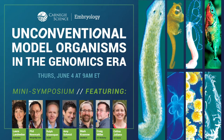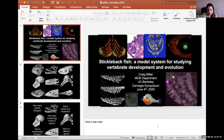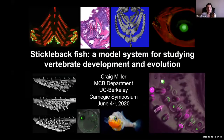Our next speaker is Craig Miller. He is now Associate Professor of Genetics and Genomics and Development at University of California, Berkeley. Dr. Miller studies the development and the evolution of the vertebrate skeleton using the three-spined stickleback fish as a model, and today is going to talk about the genetic basis of tooth gain.